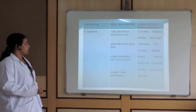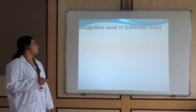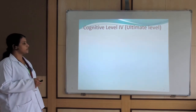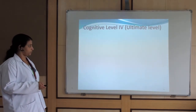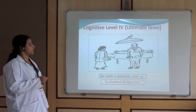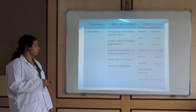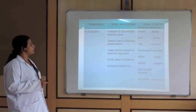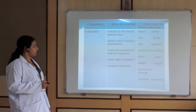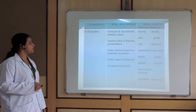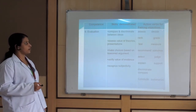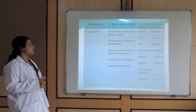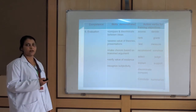The higher level of the cognitive domain is judgment — the ultimate level. This level deals with independent judgment or evaluation. Skills demonstrated include comparing and discriminating between ideas, assessing the value of theories and presentations, and making choices based on reason. Action verbs used include: assess, decide, track, grade, test, measure. These action verbs assess the evaluation domain, which is the highest level of the cognitive domain.